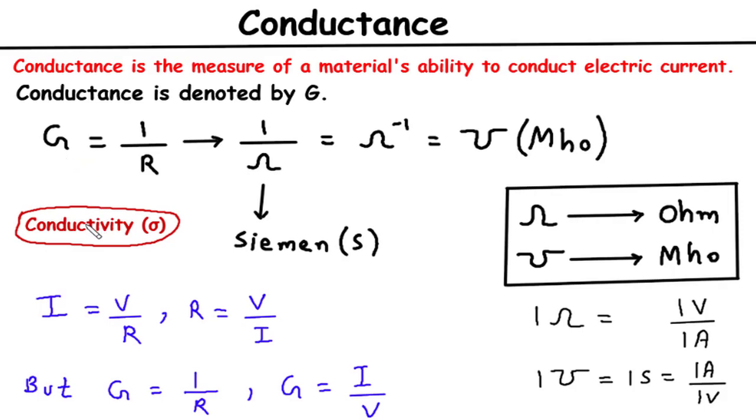While conductivity describes the intrinsic property of a material, conductance takes into account both the material and its structural aspects. Conductance is closely related to Ohm's law, which is a fundamental principle in electrical engineering.